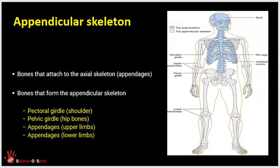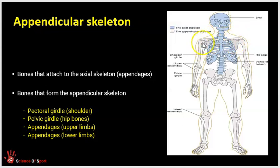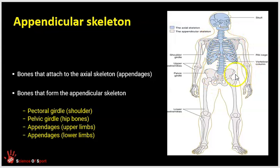Moving on to the appendicular skeleton — the axial skeleton is shown in blue and the appendicular skeleton in lighter colors. We have the pectoral or shoulder girdle on either side, the upper limbs forming our arms, the pelvic girdle or hip bones, and the bones of the lower limbs — our legs. The appendicular skeleton connects to the axial skeleton at the two sets of girdles.